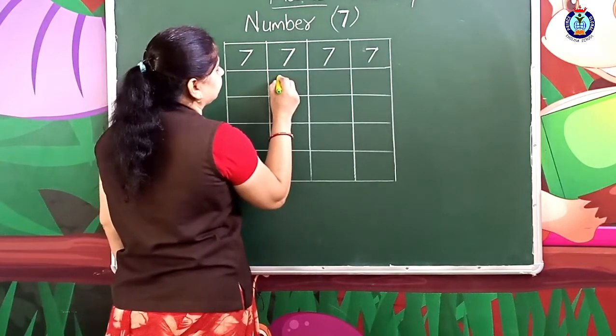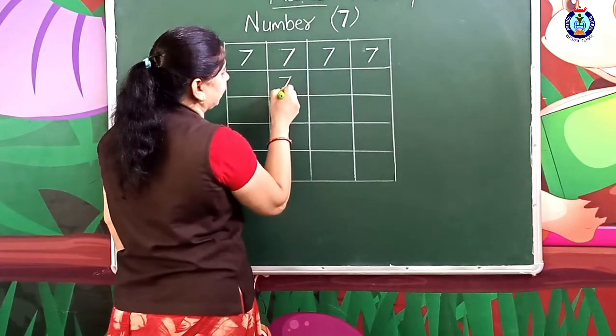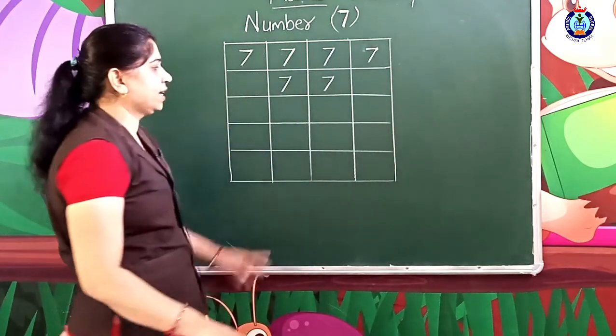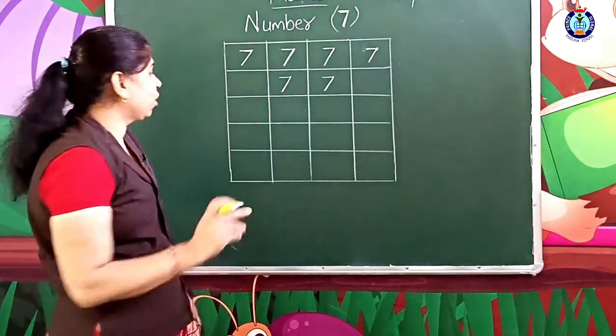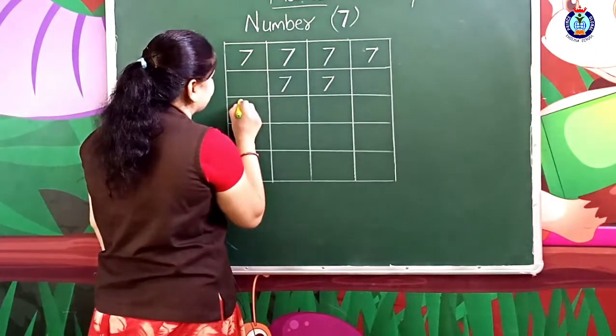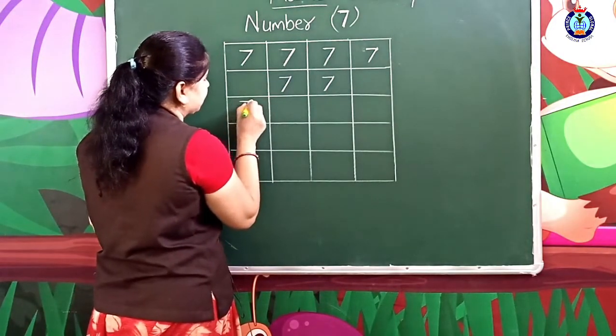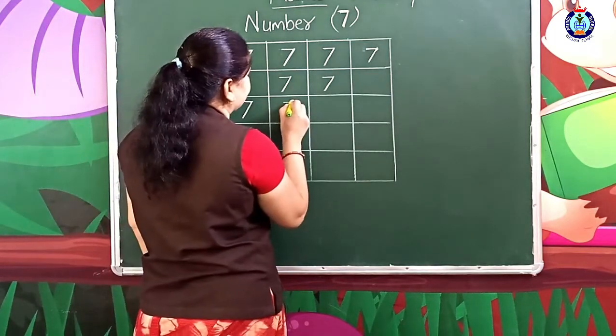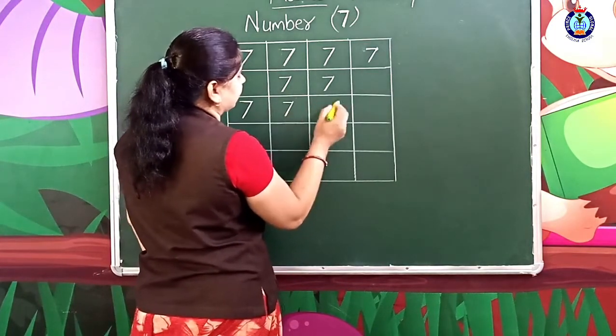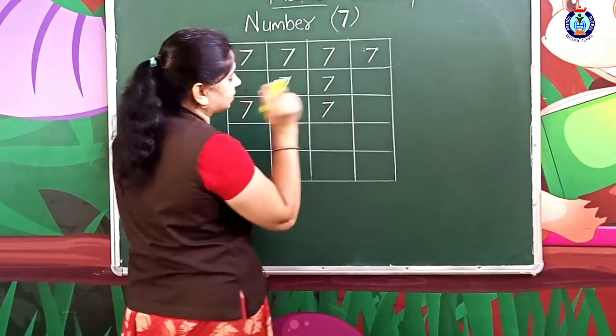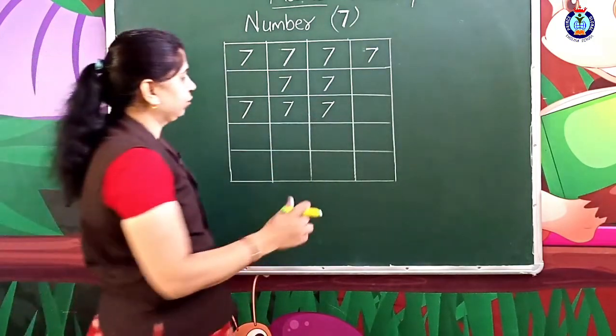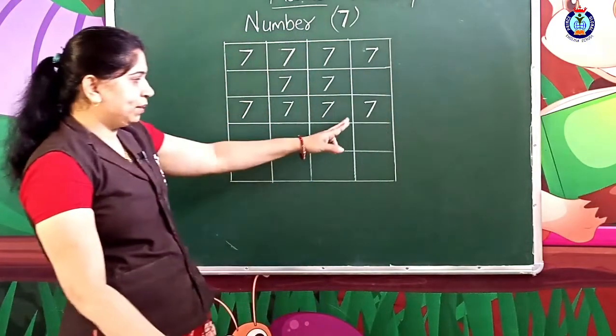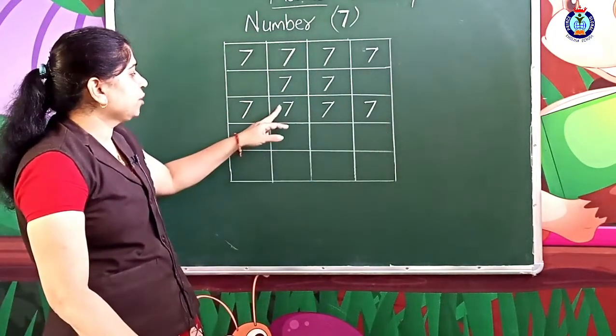Number 7 has two lines: a sleeping line and a slanting line. A sleeping line, then a slanting line makes number 7.